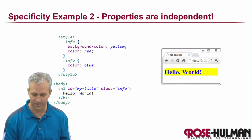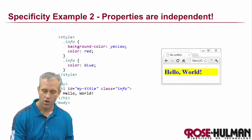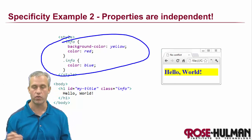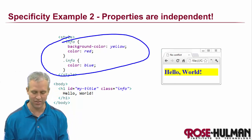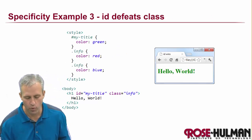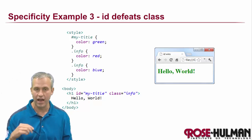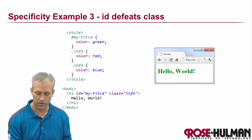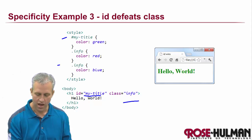Properties are all independent, which is just crazy if you think about what the browser is doing so fast to make these web pages visible. Next: it's not that last just wins. Here we've got an ID and also a class. The ID is considered more specific.